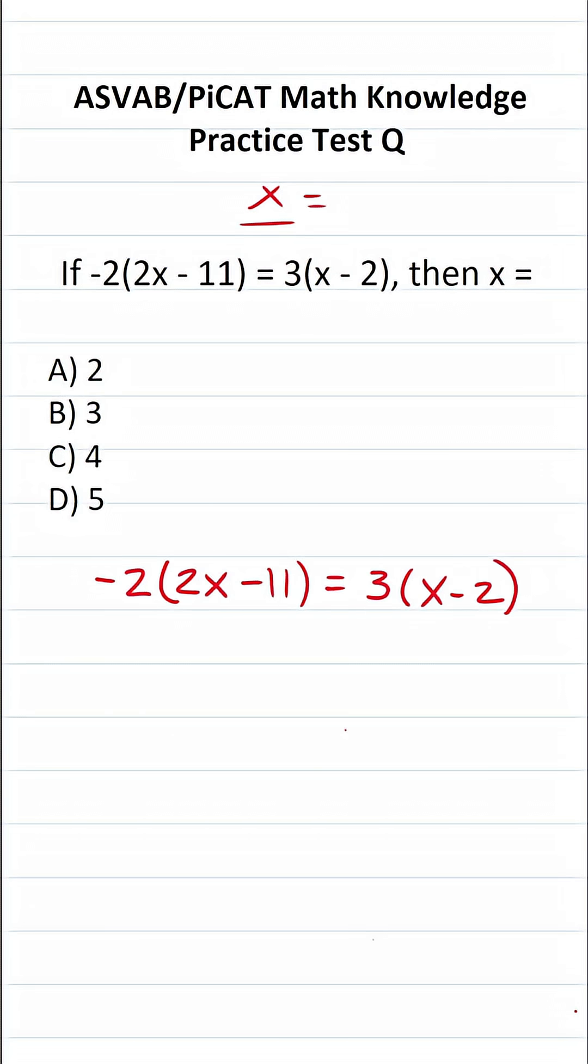In order to solve this equation, the first thing we have to do is take this negative 2 and distribute it here and here. And likewise, we have to take this 3 and distribute it here and here.